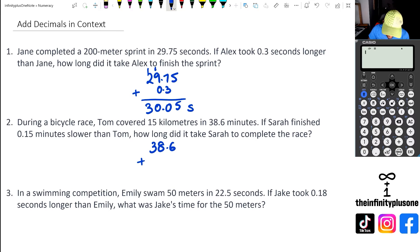So we're adding 0.15. If you remember, 38.6 is the same thing as saying 38.60, so we've got 0 plus 5 which is 5, 6 plus 1 is 7, and then we've got 8, so 38.75 minutes.